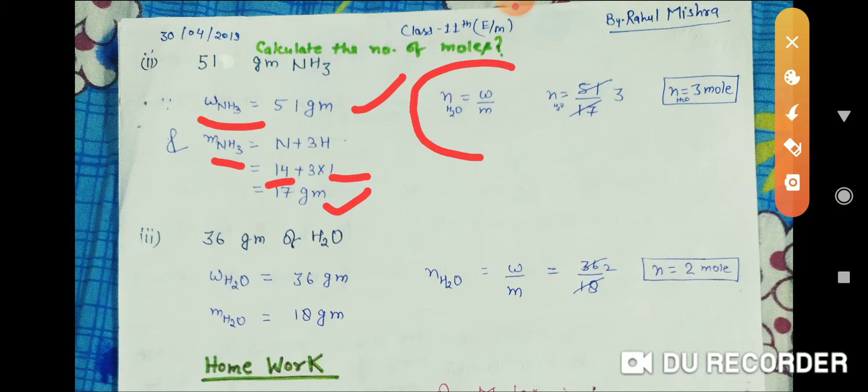On applying the formula for number of moles, n = W/m, the number of moles will be equal to... W is 51 and m is 17, so on putting the values, the number...